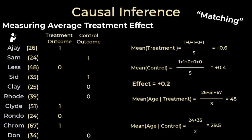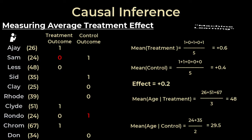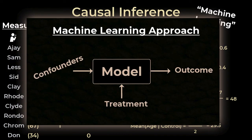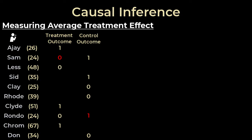One way to do this is by matching — you try to find people of the same age who received the other treatment and use that as the counterfactual estimate. In this example, Sam and Rondo are the same age and received different treatments, so if Sam had received the treatment we might see something similar to what we saw with Rondo, and vice versa. Another slightly more complex way to fill these spaces and determine the counterfactuals is by using machine learning — building a model that takes in age and treatment as inputs and then predicts the output, trained on factual data to predict the counterfactuals. Whatever technique we use, let's say the counterfactuals are populated as shown in red.